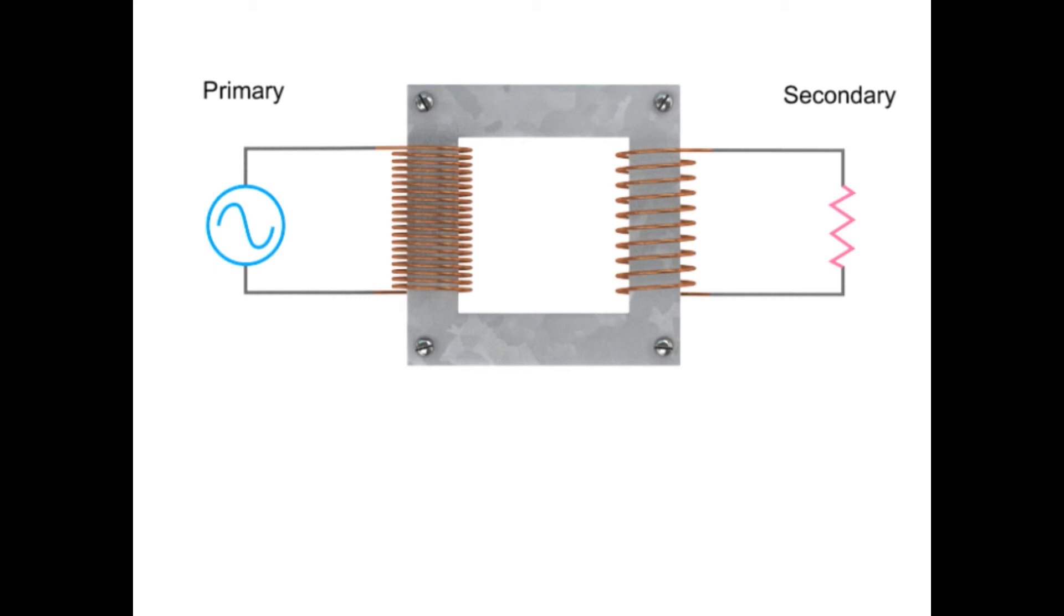In this example, we have 20 turns on the primary coil and 10 turns on the secondary coil. To determine the decrease in voltage occurring in this step down transformer, we can use a simple ratio formula.